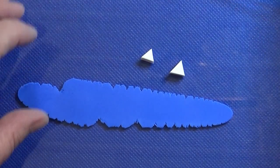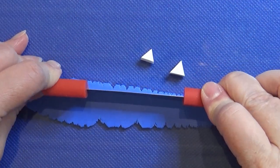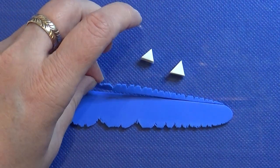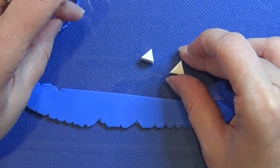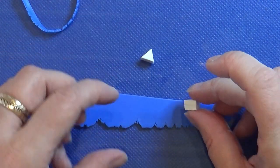The blue clay is a royal blue and I rolled that out on a setting five on my pasta machine. I cover the edge of this small triangle with the blue.